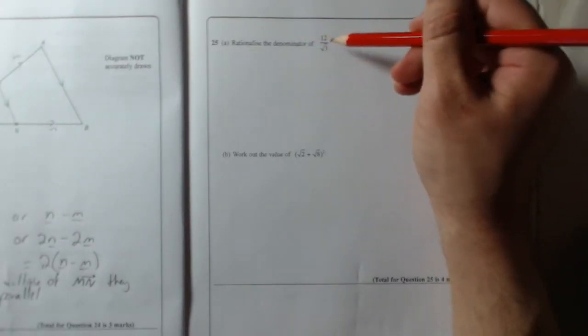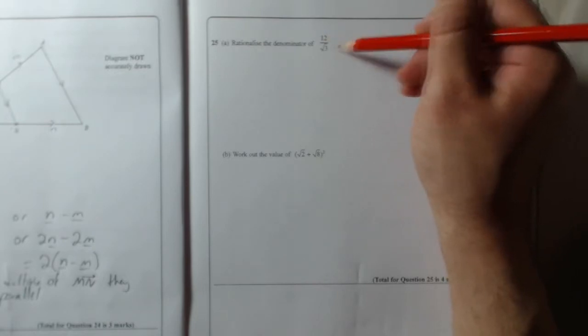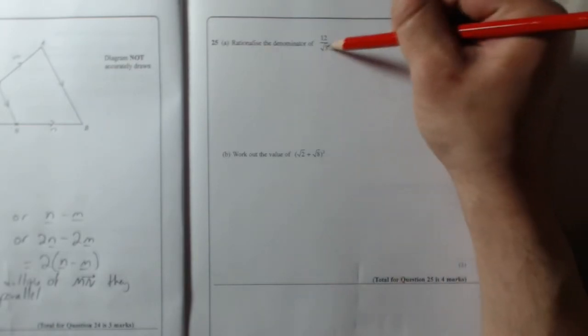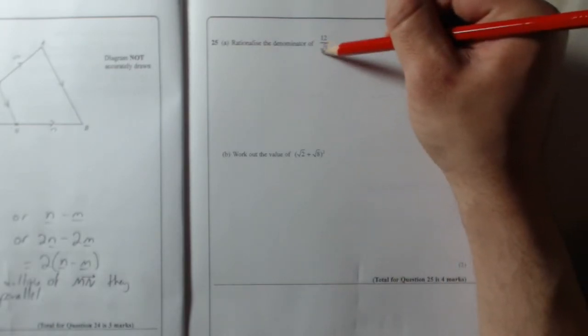Question 25. Rationalize the denominator of 12 over root 3. Now remember, people freak out with questions like this, but all you've got to do - all it means is the denominator can't be a square root.